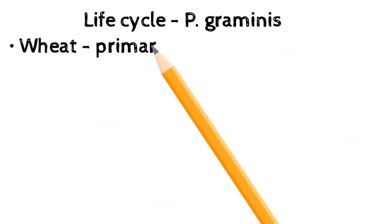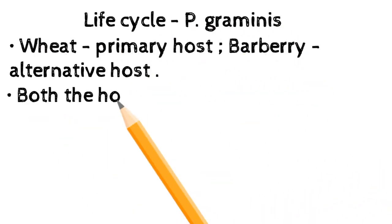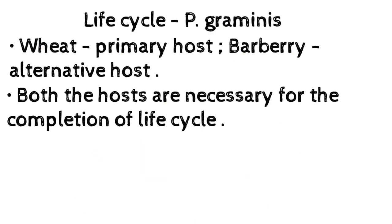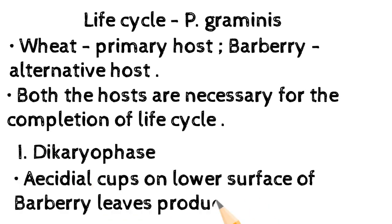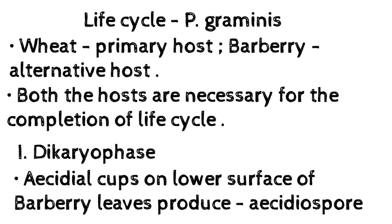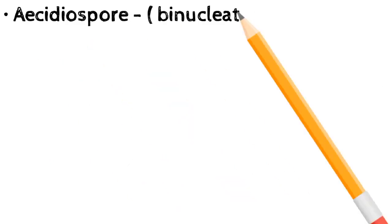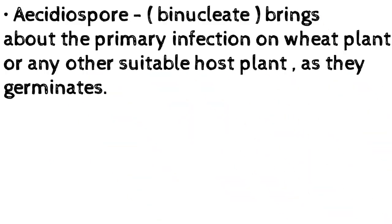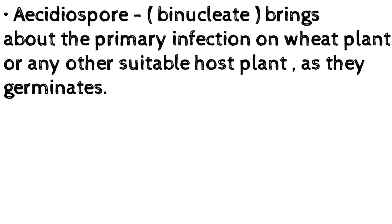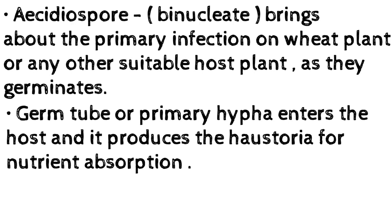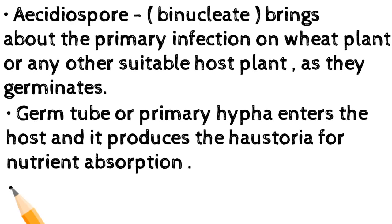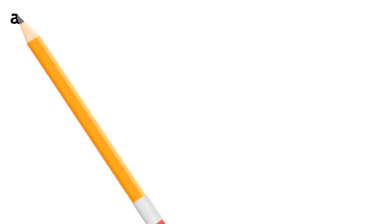Life cycle of Puccinia graminis: wheat is the primary host and barberry is the alternative host. Both hosts are necessary for the completion of the life cycle. I. Dikaryophase: aecial cups on the lower surface of barberry leaves produce aeciospores. Aeciospores are binucleate and bring about the primary infection on the wheat plant or any other suitable host plant as they germinate. The germ tube or primary hypha enters the host and produces haustoria for nutrient absorption. The cells of the hypha are binucleate and together constitute a dikaryon.